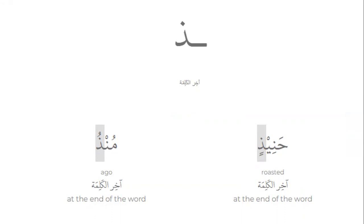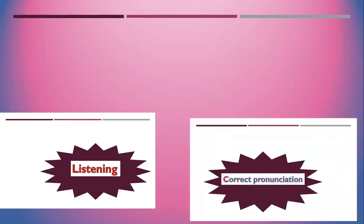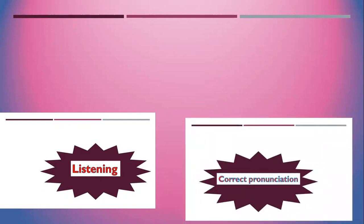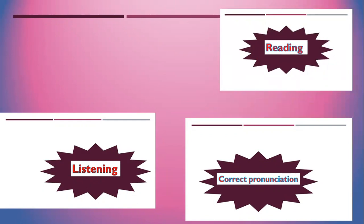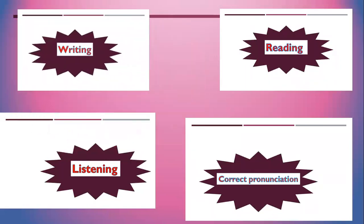Today insha'Allah we will cover four parts of our letter study. Number one: listening — you will know the sounds of Zal with different vowels. Number two: correct pronunciation — you will know how to pronounce Zal correctly with the right sound. Number three: reading — you will be able to read many words with letter Zal with many vowels. Number four: writing — you will be able to write letter Zal at the beginning, in the middle, and at the end.